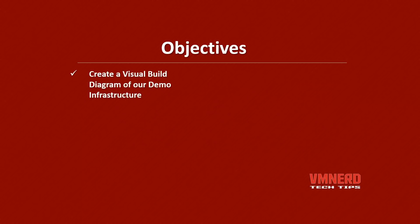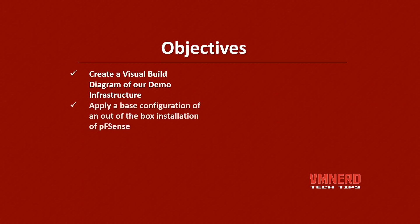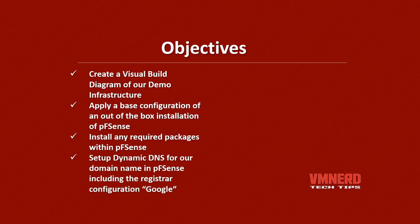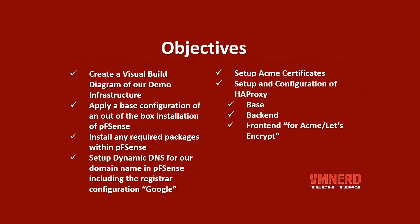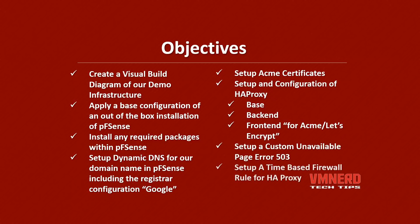Our objectives are to create a visual build diagram of our demo infrastructure, apply a base configuration of an out-of-the-box installation of PFSense, install any required packages, set up dynamic DNS for our domain name including the registrar configuration, set up and configure Acme certificates, configure HAProxy including back-end and front-end configuration to support Acme Let's Encrypt, set up a custom unavailable page, configure a time-based firewall rule for HAProxy and Let's Encrypt, and perform some external testing. And with that, let's get started.